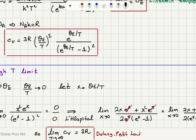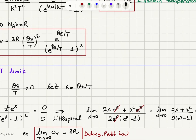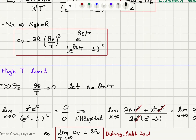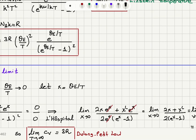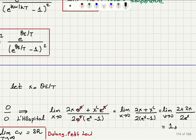Applying L'Hôpital's rule: the derivative of the numerator is 2x·e^x + x²·e^x, and the derivative of the denominator is 2(e^x − 1)·e^x. The e^x factors cancel, giving the limit as x → 0 of (2x + x²)/(2(e^x − 1)). Substituting x = 0 again gives 0/0, so one more application of L'Hôpital's rule gives (2 + 2x)/(2e^x), and substituting x = 0 gives 2/2 = 1.